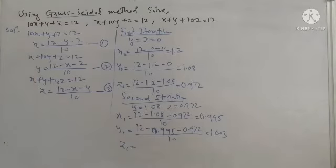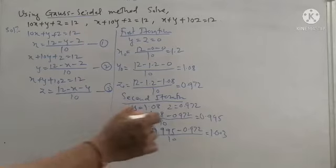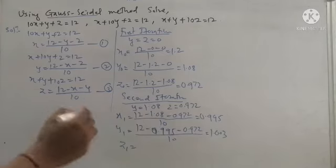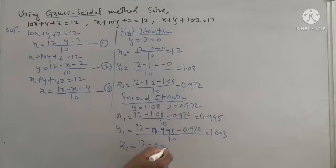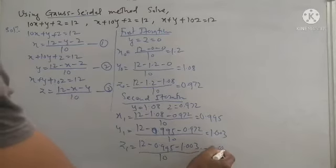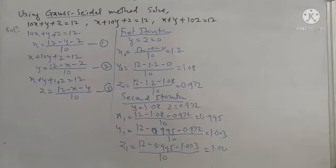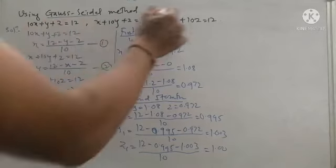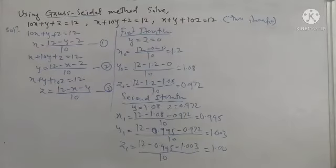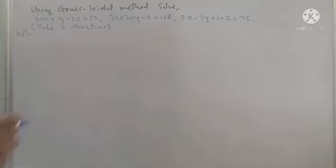For z1, using equation 3, putting x = x1 = 0.995 and y = y1 = 1.003 on the right-hand side: (12 - 0.995 - 1.003) / 10 = 1.003. These are the two iterations we were asked for in this example.